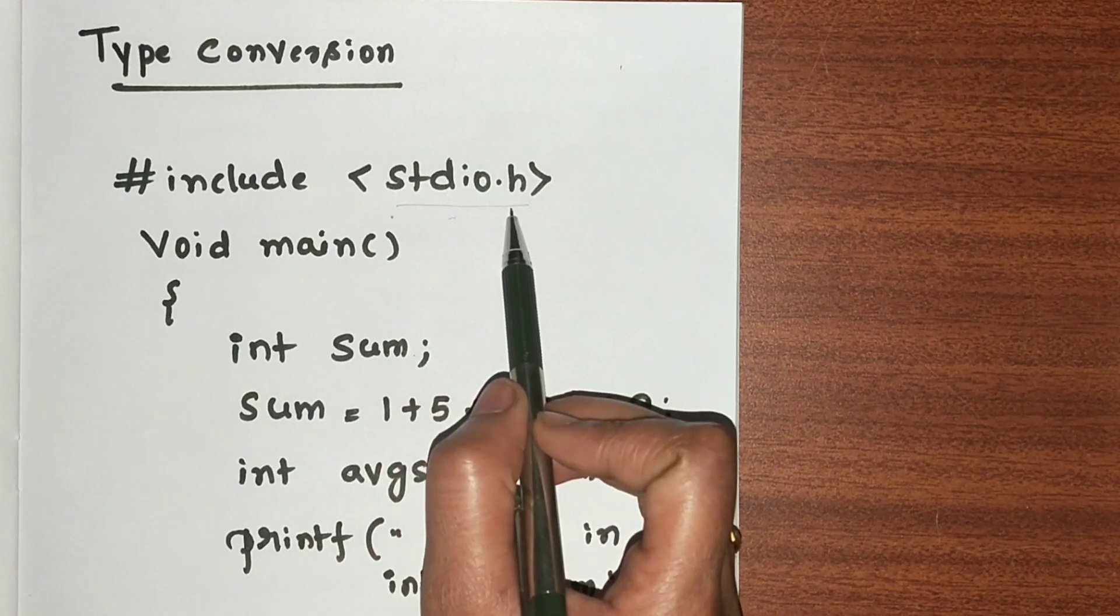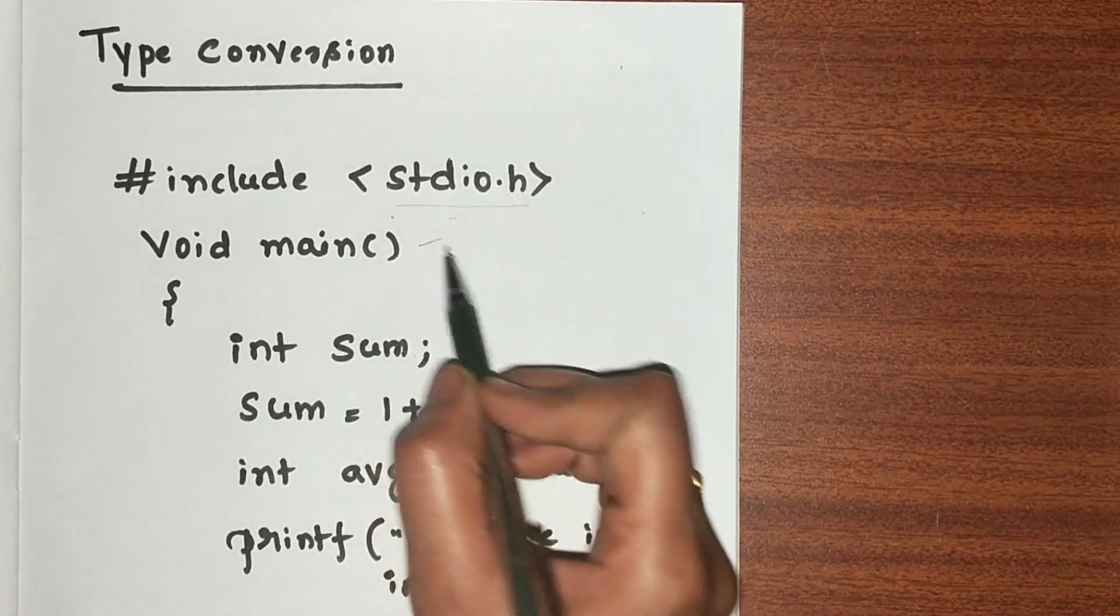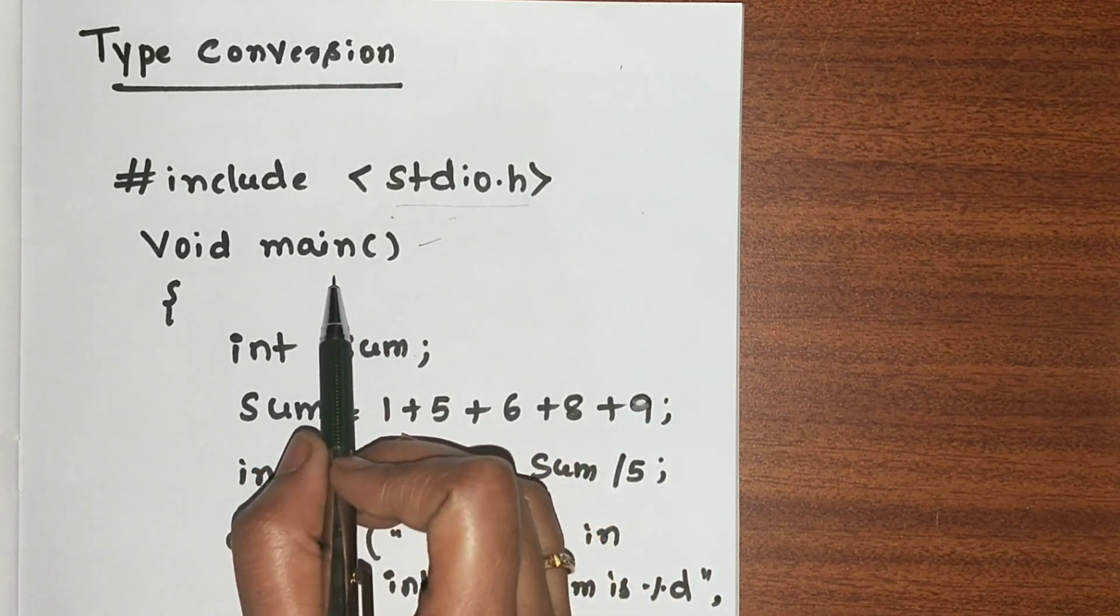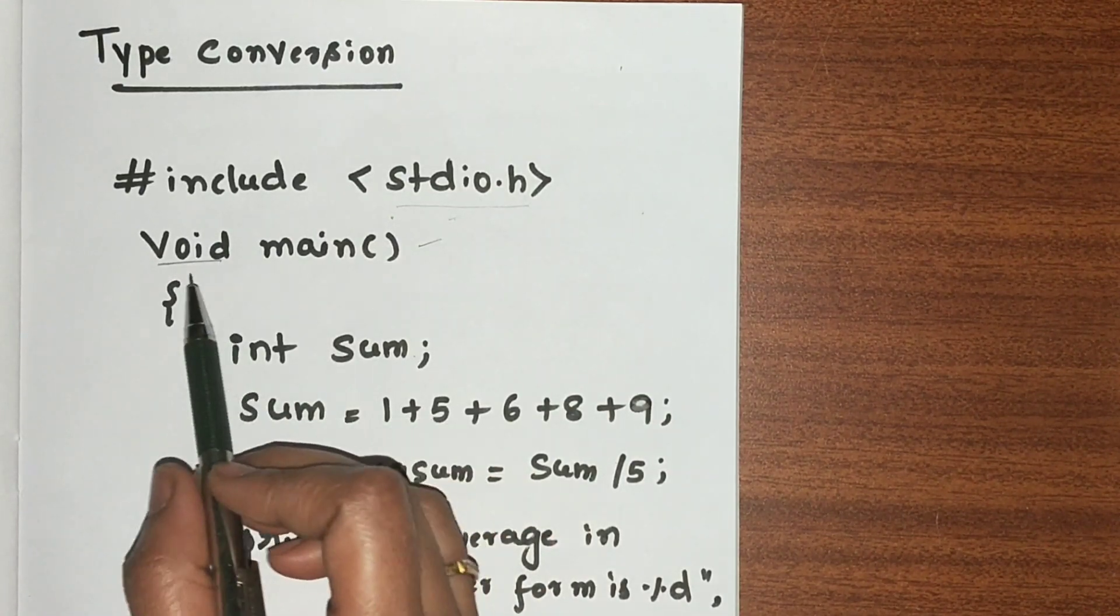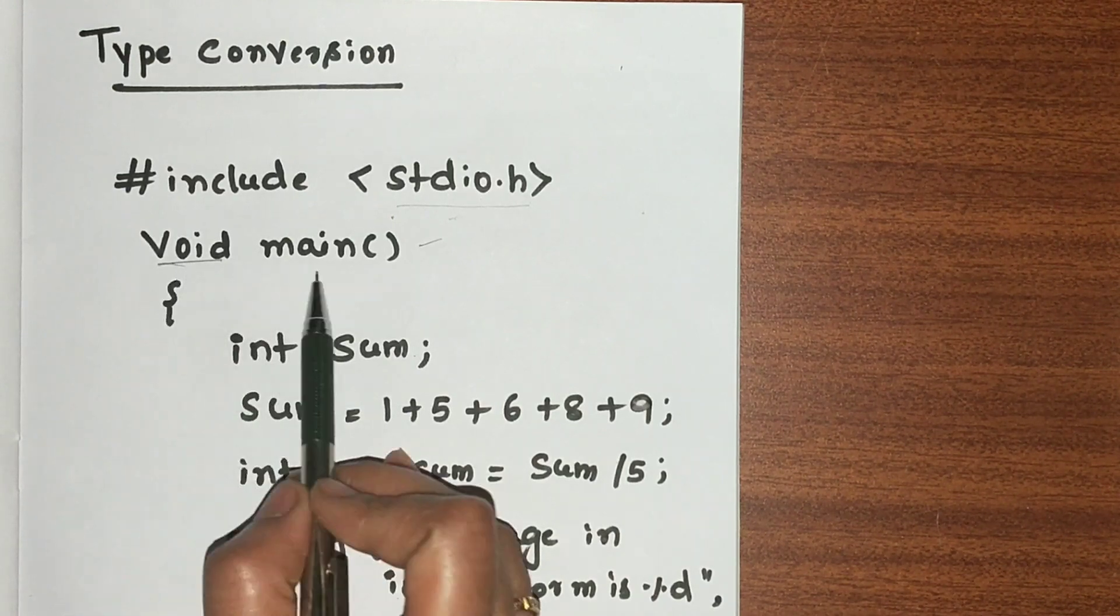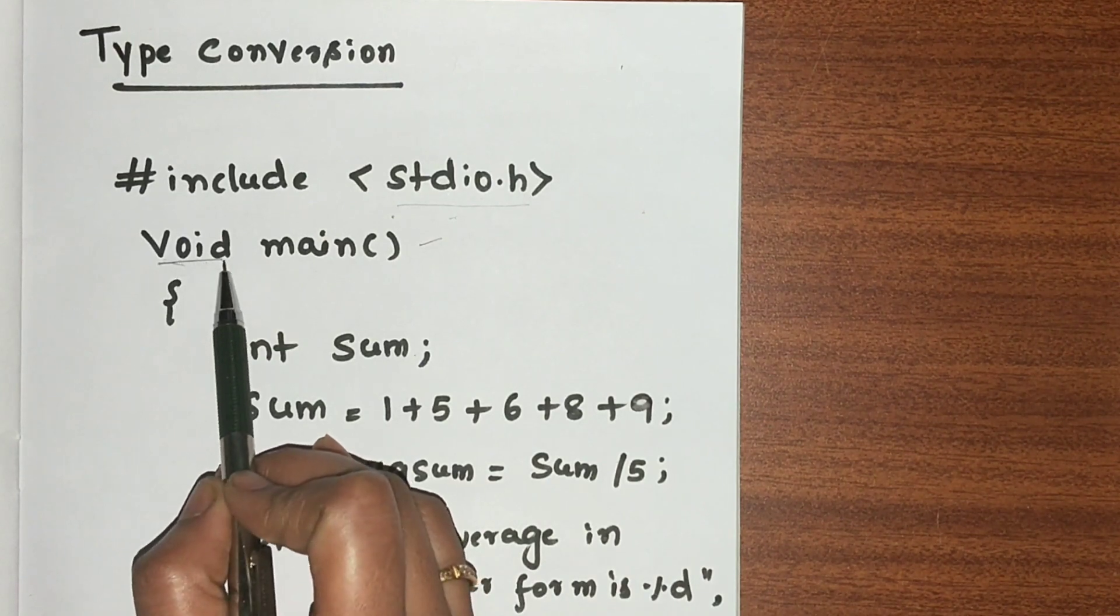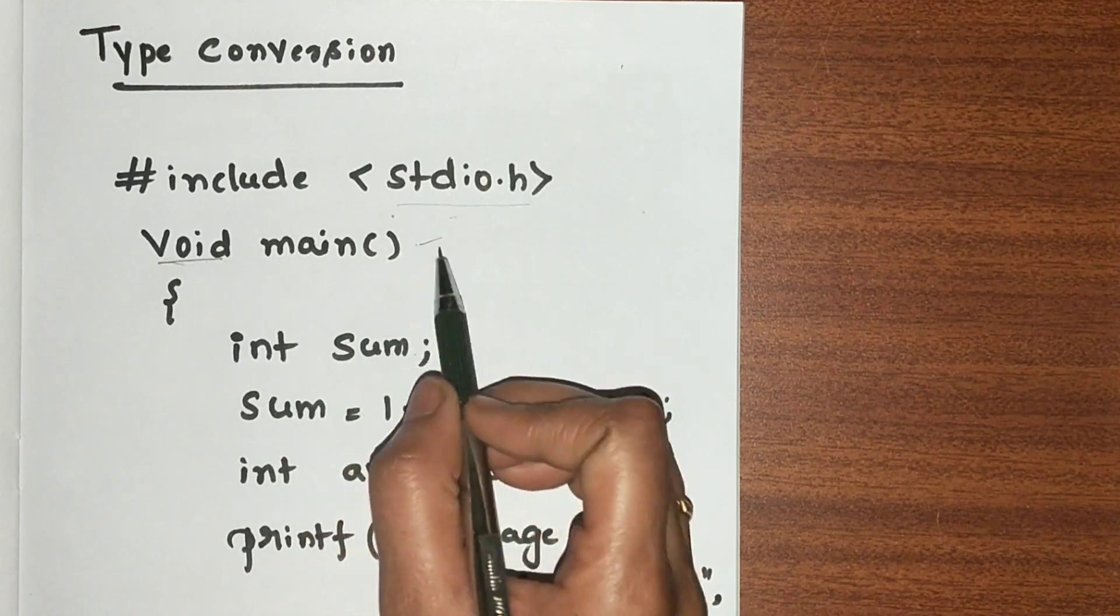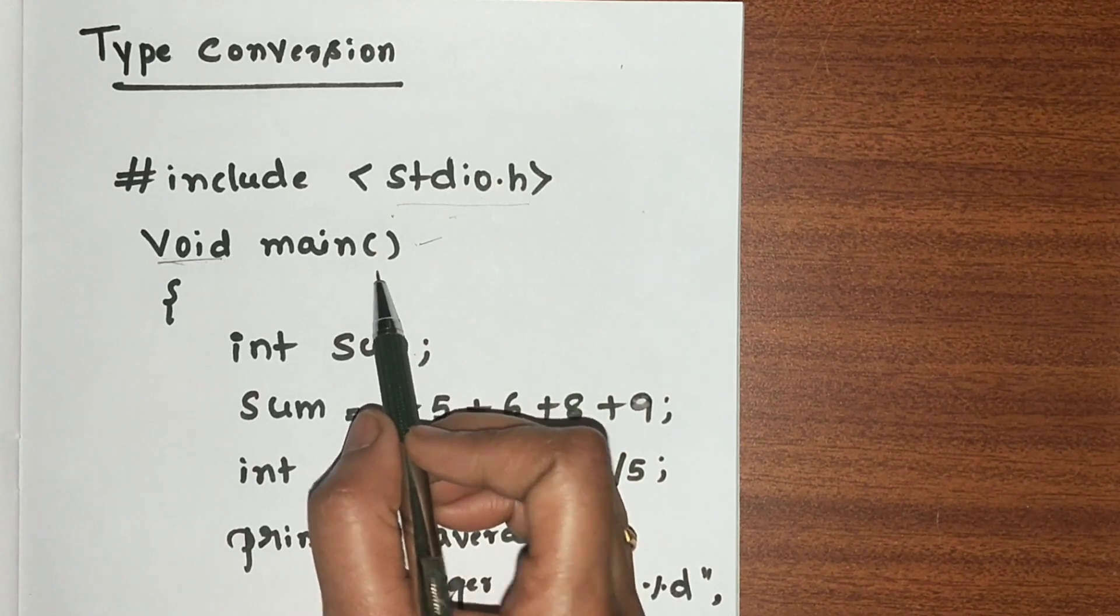Next, I am writing void main(). Main is a function where our program execution begins. Why are we using void? Because this function is not returning anything. When a function doesn't return something, we use void. So void main() is the function from where the program execution begins.